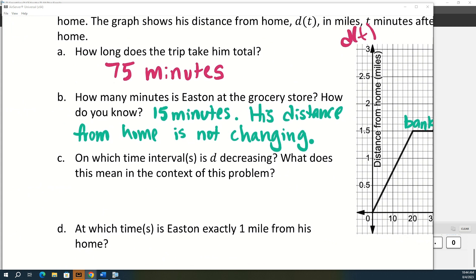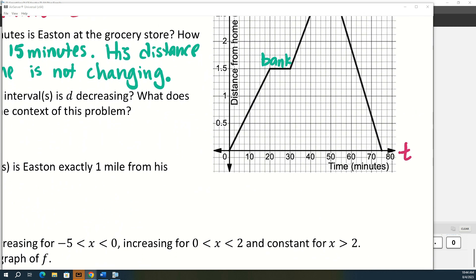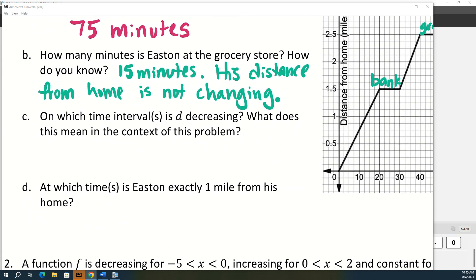So C asks, on which time interval or intervals is d decreasing? So let's start with that. So decreasing is going to be this section right here. Now I'm sure your algebra 2 teacher told you that only the x matters. In this case, only the time matters. We only care about between what two times this is happening. So what do you guys think? Between what two times? 55 and 75. So the smallest number where the function is decreasing is 55, the largest is 75.